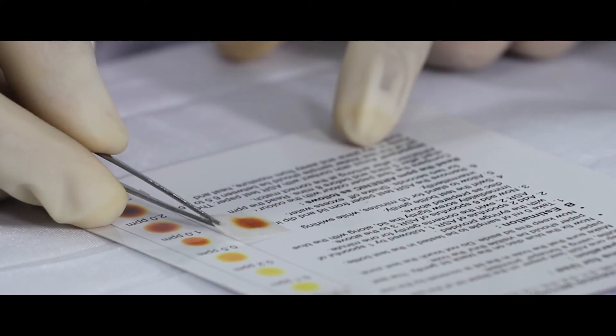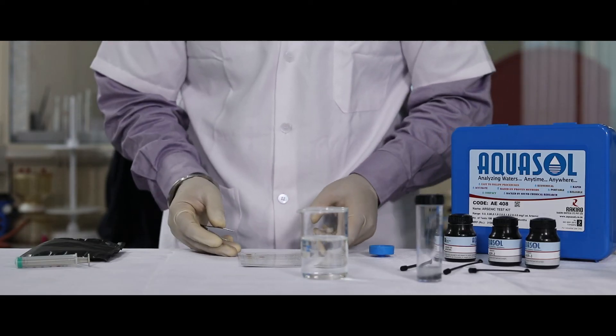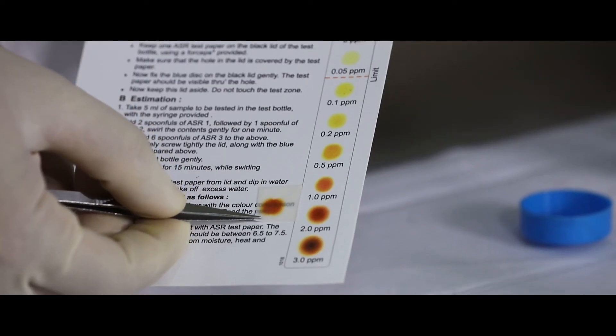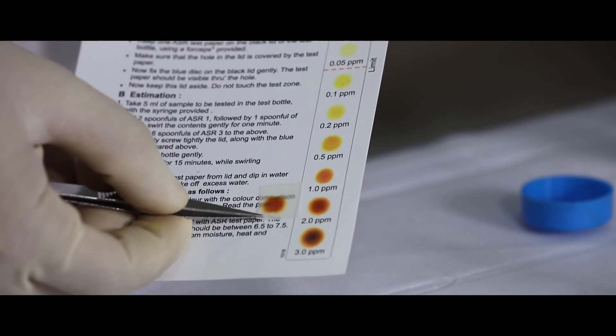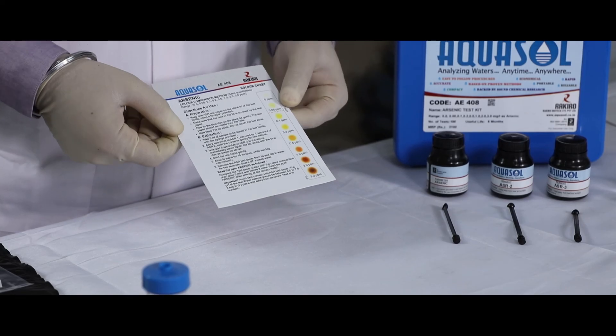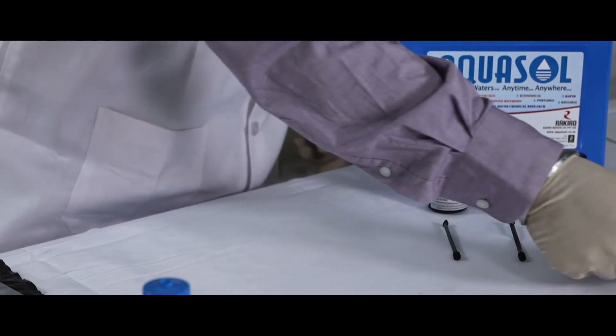Compare the color of the test paper using the chart. The matching color will indicate the PPM arsenic. For better understanding of the product, please refer to the instructional leaflet provided.